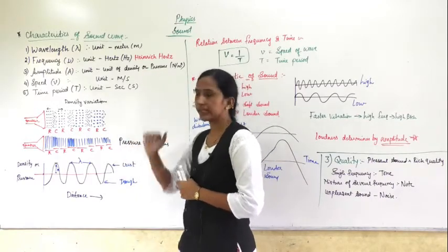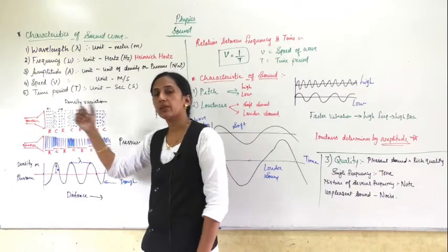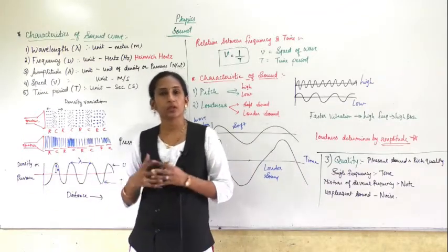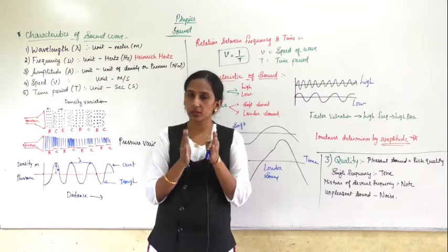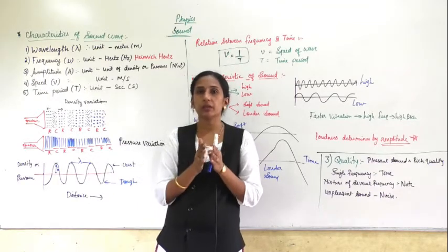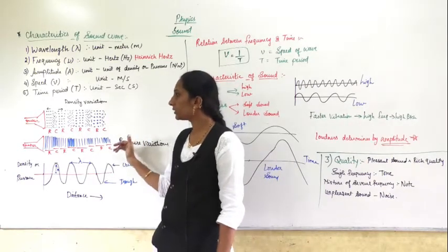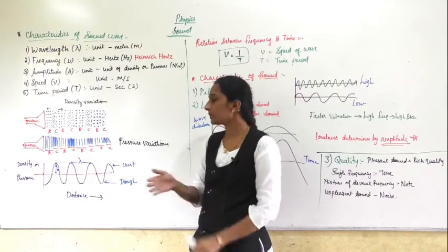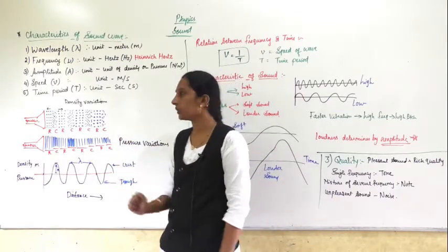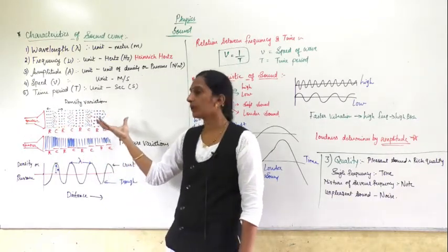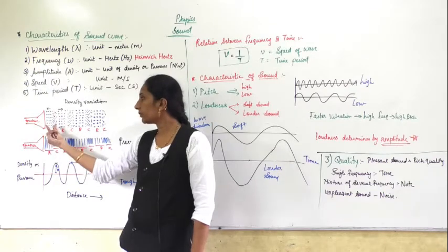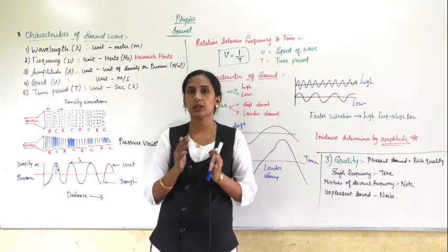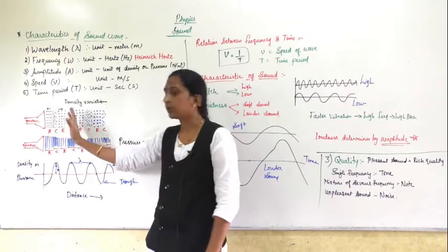Here you can see a speaker. When you turn on the speaker, it produces sound. As we have studied, when sound is produced, it makes the nearby air particles vibrate. I have drawn three conditions: first for the density of air particles, then for the pressure created in the air particles, and third, the wave related to these two. When the speaker is on, you can see there is rarefaction — the sound coming out from the speaker makes the particles move in a forward motion.